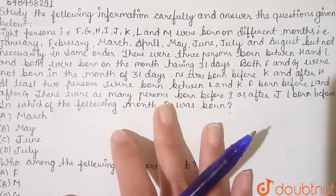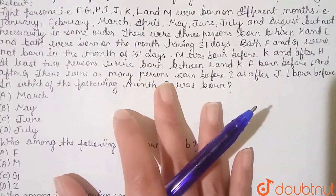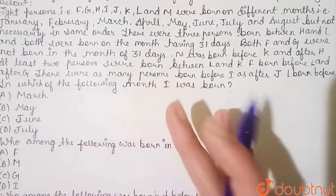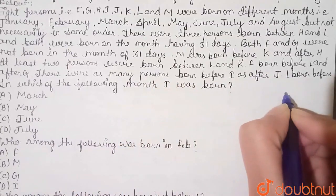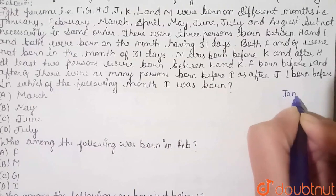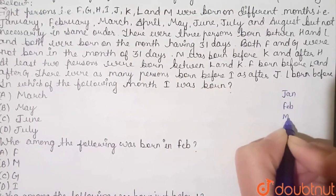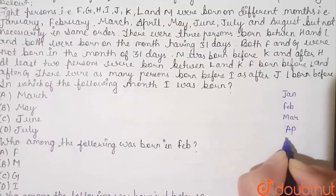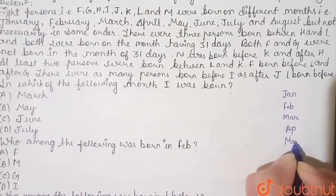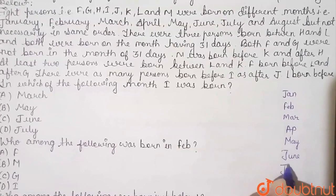This is a total of 8 persons: F, G, H, I, J, K, L, and M. The months given are January, February, March, April, May, June, July, and August.